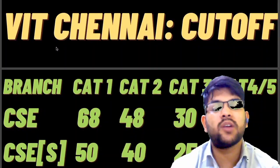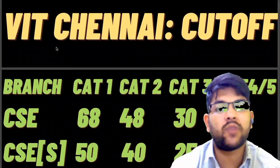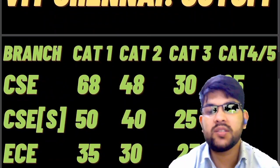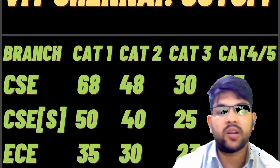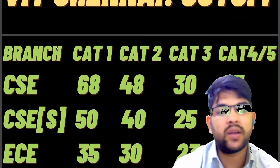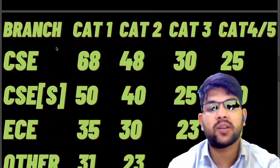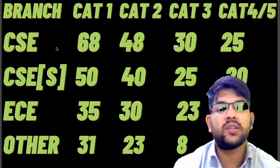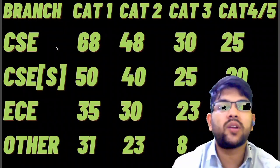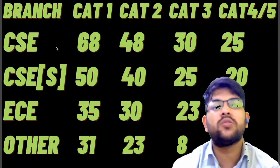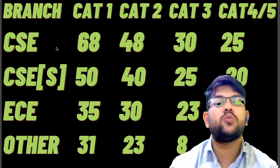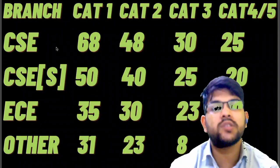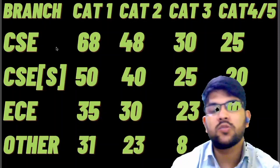For VIT Chennai, CSE specialization: 50 marks for Category 1, 40 for Category 2, 25 for Category 3, 20 for Category 4 and 5. For EC: 35, 30, 23, and 10 marks for all categories respectively. For other branches: 31, 23, 8, and around 6 for Category 4 and 5, as those are less demandable — Category 4 and 5 fees are 4.5 to 5 lakh.